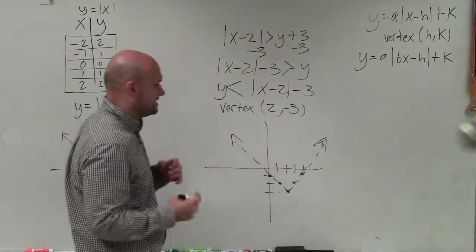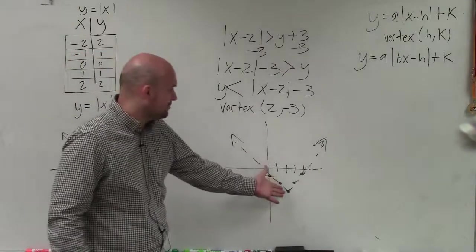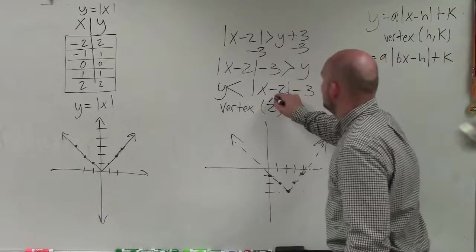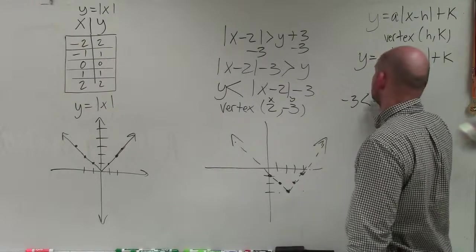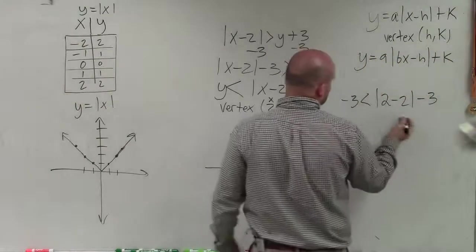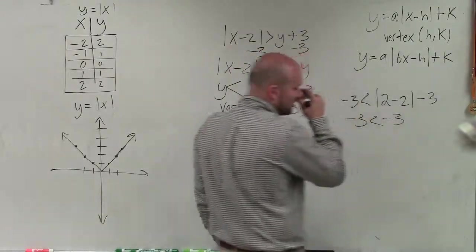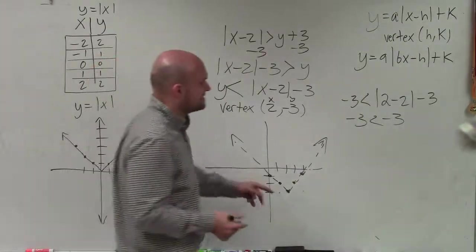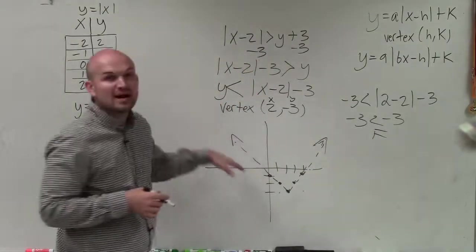So if you plugged in any point and plugged them in for your inequality, let's just choose one. Let's choose the vertex, x, y. So let's plug that in. So y is negative 3 is less than absolute value of 2 minus 2 minus 3. So 2 minus 2 is 0. Absolute value of 0 is 0. So I have negative 3 is less than negative 3. Well, negative 3 is never less than negative 3. Negative 3 is equal to negative 3. So that's why that's false. And that means any point that's on that graph will also be false. That's why it's dashed.